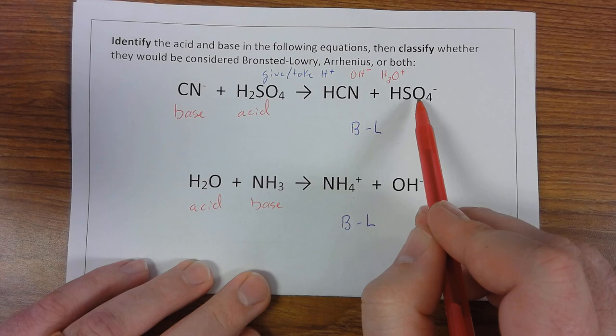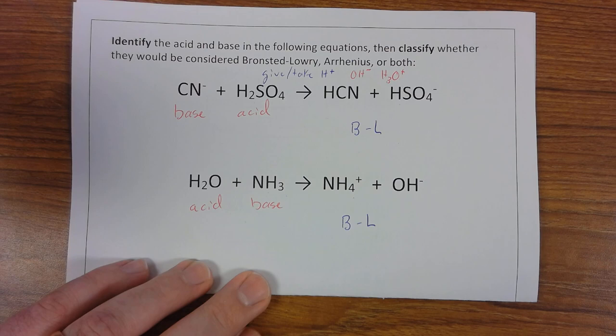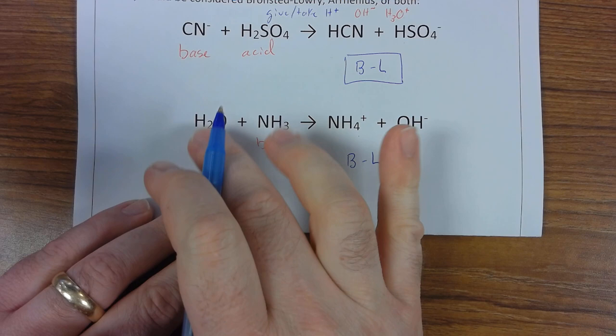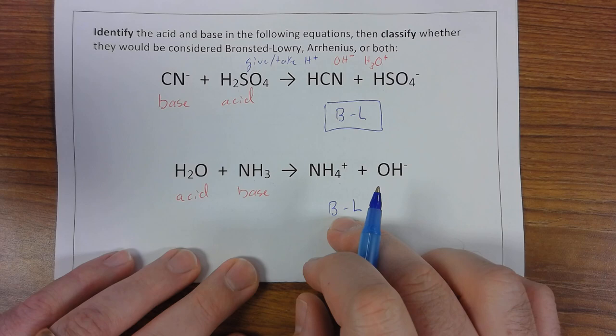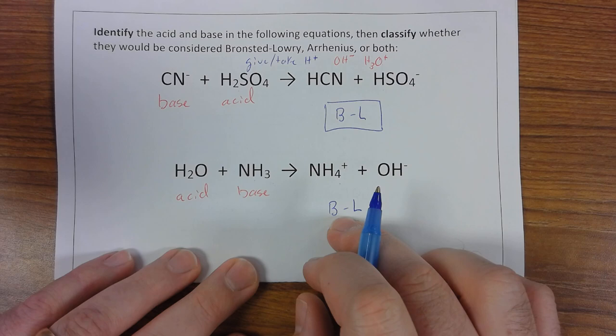So this first reaction right here, notice that hydroxide and hydronium, neither of them came up in this reaction. So this is just going to be an acid-base reaction by Bronsted-Lowry. But the second reaction involved water and produced hydroxide. That tells me it's Bronsted-Lowry and Arrhenius. They would have agreed on these guys being acids and bases. So I'm going to say both. Bronsted-Lowry and Arrhenius would agree on this being an acid-base reaction.